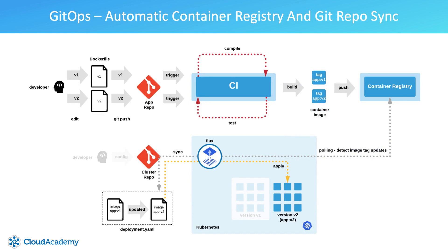Flux also has the capability of polling a container registry in which your container images may reside. In the case of detecting an updated container image, Flux will search for and update any cluster manifest files stored within Git which have been configured with known custom Flux annotations. These annotations instruct Flux to edit and update them with the latest detected container image tag name, with the changes being automatically committed back into the Git repository. Flux will then resync the cluster state with the updated and most recent commit, resulting in older container instances being replaced with newer ones running the newer version of the container image. This ensures that the current cluster state always reflects what is held within the Git repository.